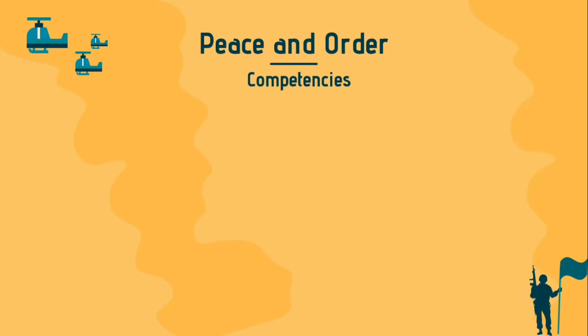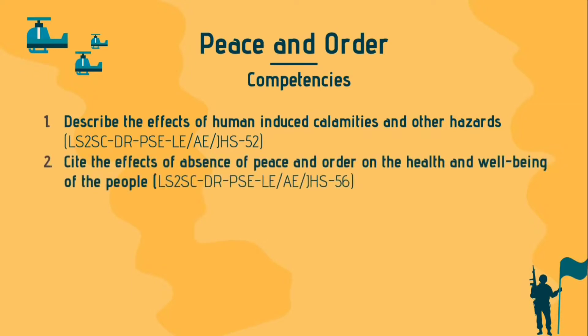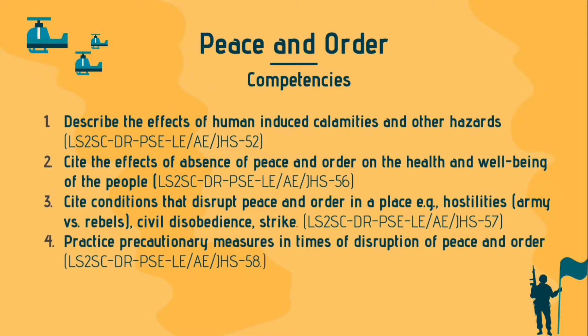The following are our objectives for this lesson. 1. Describe the effects of human-induced calamities and other hazards. 2. Cite the effects of absence of Peace and Order on the health and well-being of the people. 3. Cite conditions that disrupt Peace and Order in a place, for example, hostilities, civil disobedience, and strife. 4. Practice precautionary measures in times of disruption of Peace and Order.